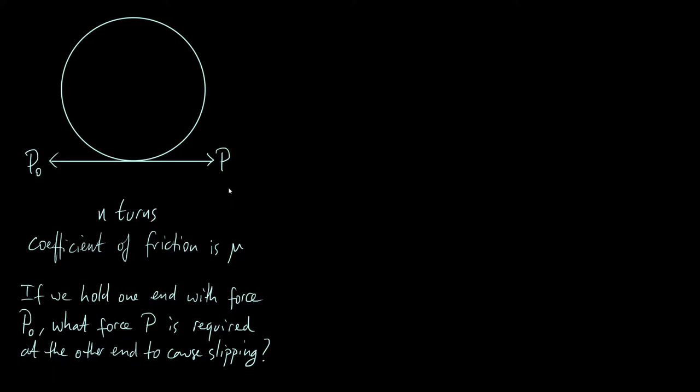You might not have heard the word capstan before — it's basically a cylinder like this which they use on boats to wrap ropes around, because that lets you multiply the force that you pull on a rope with. So what we're talking about here does actually have a practical application in these devices called capstans.